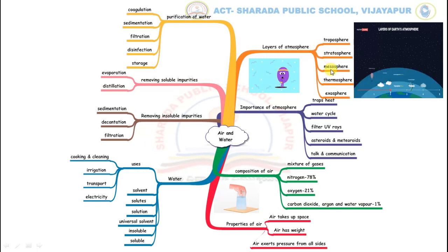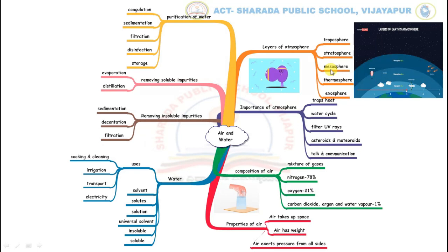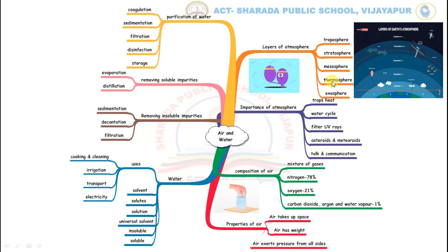Ozone absorbs harmful ultraviolet rays from the sun. The third layer is mesosphere. It is the coldest part of the atmosphere. Most meteoroids and asteroids burn up in the mesosphere due to friction. The fourth layer is thermosphere. It is hotter than the lower layers, though there is very little air.